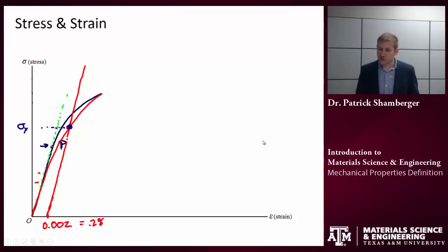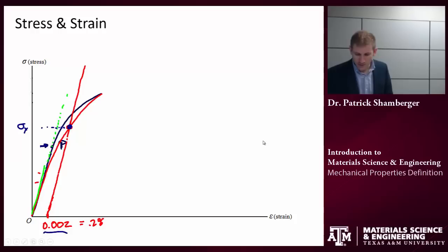And the reason that we use this convention is that it's very difficult sometimes to identify some specific point where it deviates from linearity. Now, that's not always true. Some stress-strain diagrams might be very distinct, and then it's easier to say, yes, the yield stress is here. But I would encourage you to use this convention whenever possible.